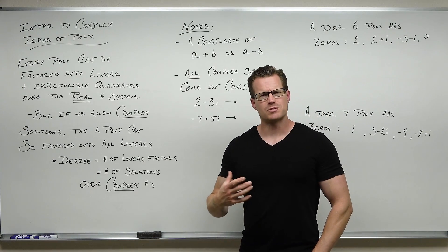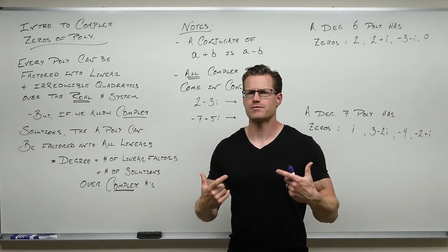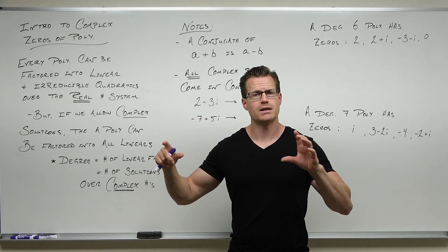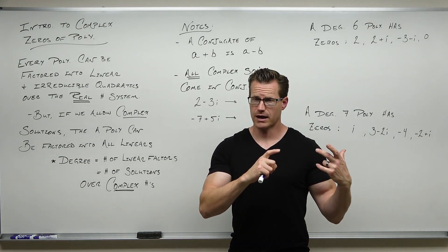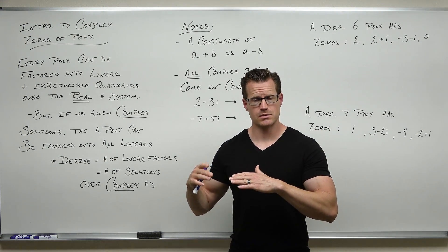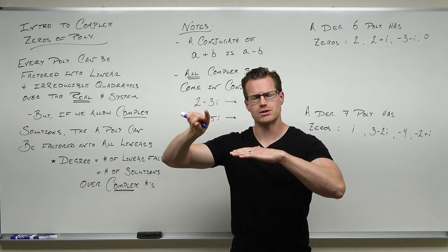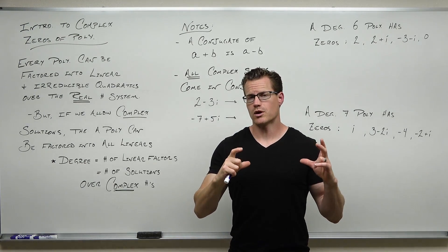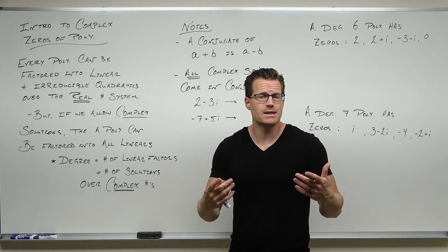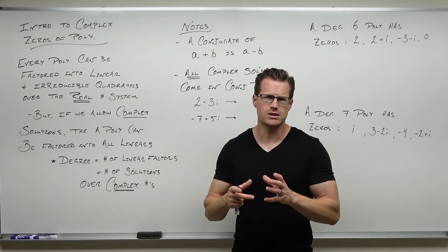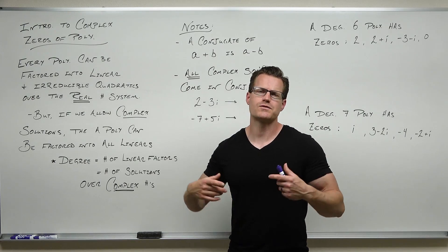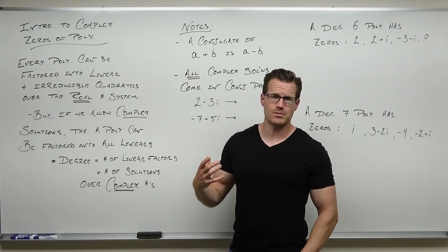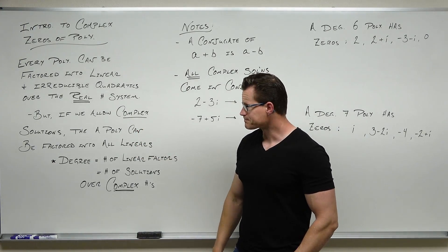One thing I've been speaking of — I never wrote it down — is this fact: every polynomial can be factored over the real number system into linear or irreducible quadratic factors. Linears give you x-intercepts, either crossings or bouncings, where we have a multiplicity that's even. Irreducible quadratics do not yield x-intercepts because they give you complex solutions. That's what we're going to start talking about — those complex solutions and how they work.